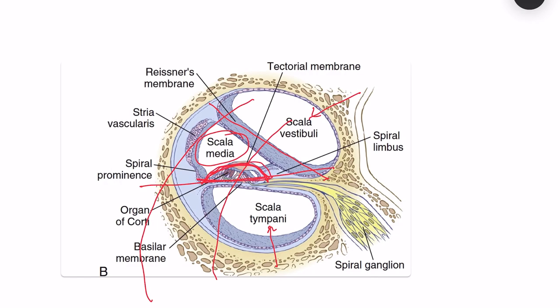We will be studying this structure in detail. The organ of Corti is arranged in a transverse manner and extends throughout the length of the cochlea. I just wanted to show you the arrangement of the organ of Corti — that is why I put this diagram.